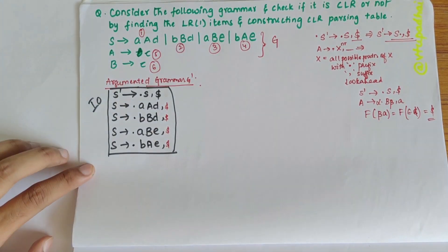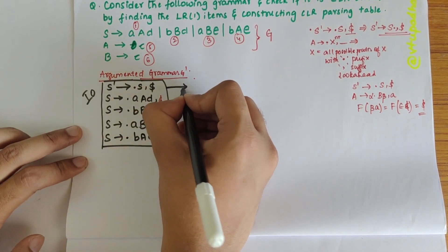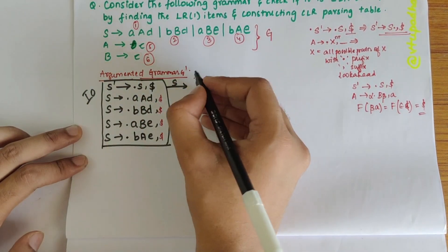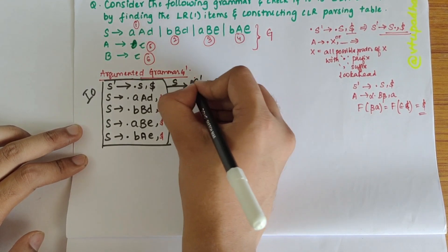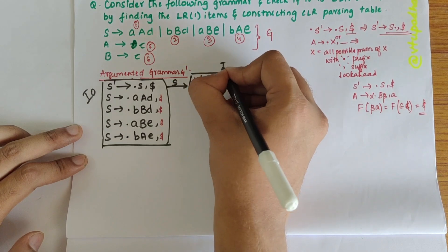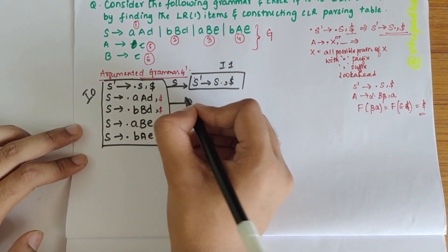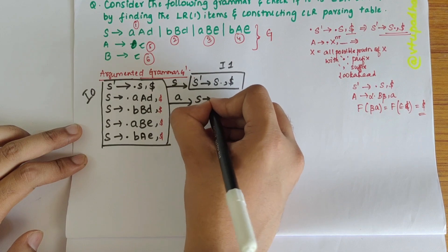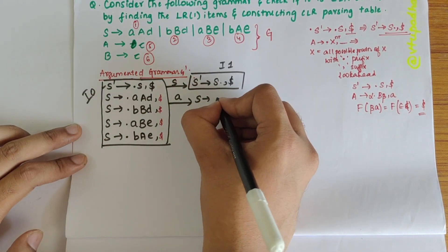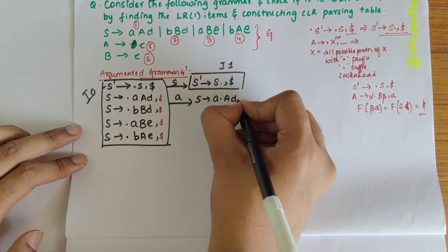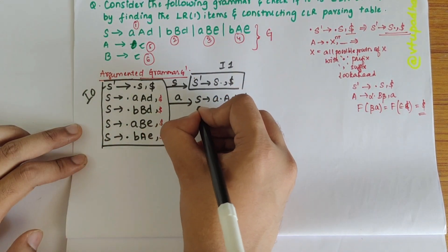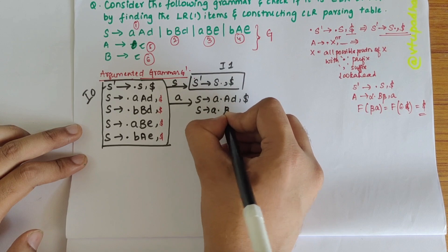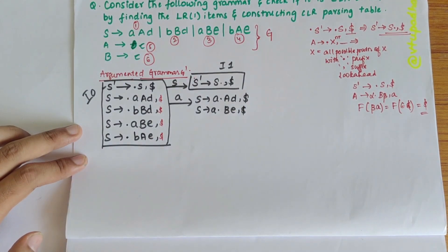Over I0 on S, the dot shifts right, giving S' → S•, $ — I'll write this as I1. Over small 'a', I get S → A•Ad, $ and S → A•Be, $, which I'll write as I2. After the dot I have A here and B, both non-terminals, so I should write all possible productions of A.